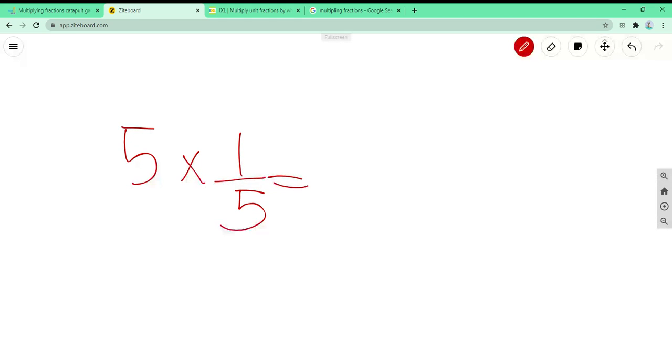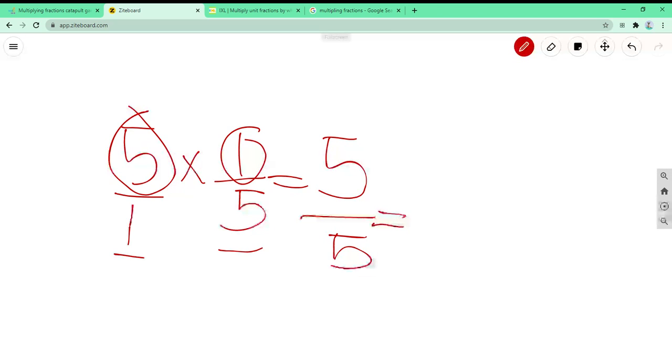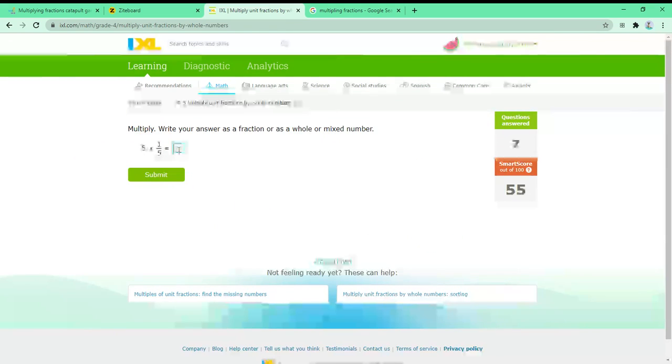So we know we have to do over 1. Then we have to do 5 times 1, which is 5, and then 1 times 5 is 5. So we can simplify it and do 5 divided by 5, and it equals to 1. A whole. So it's 1 half. That's the answer.